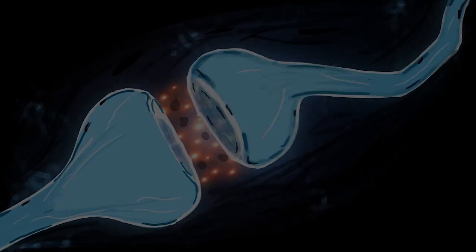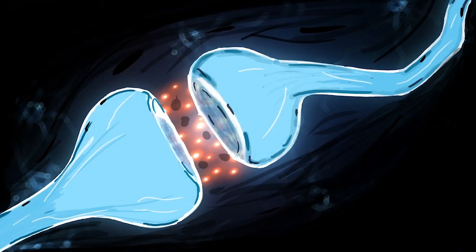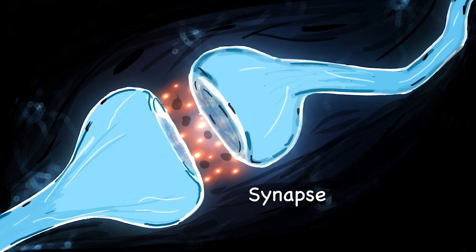Each neuron can make about up to 10,000 connections. The connection between two neurons is called a synapse.